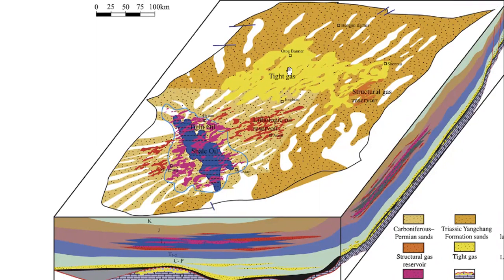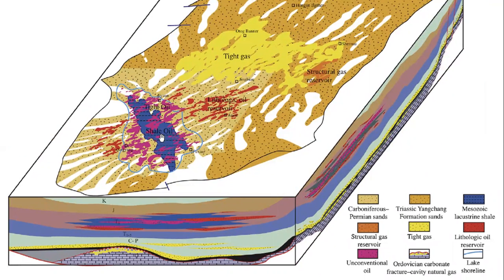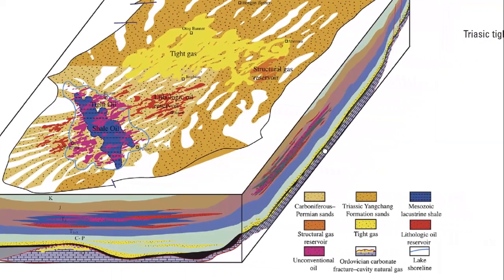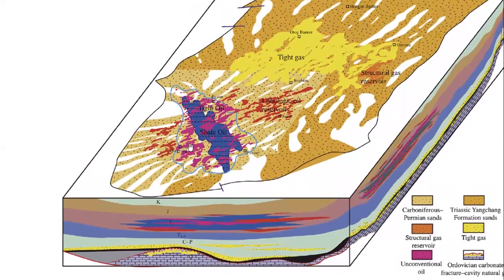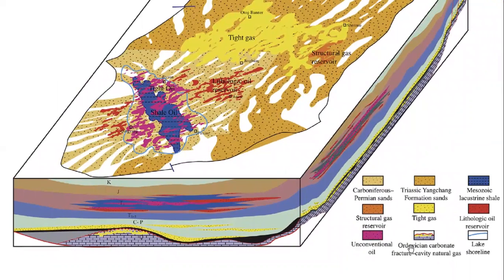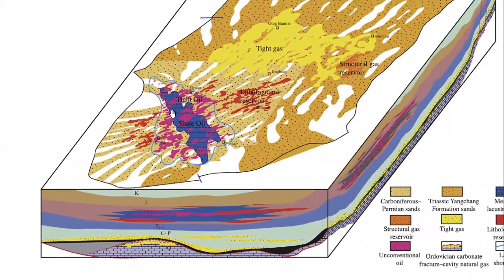The shape of the distribution follows the shape of the formation. And we have a lithologic oil reservoir in this basin — the main trapping mechanism is not structural but rather lithologic or stratigraphic. Then unconventional oil — another type of oil here. And this is the Ordovician carbonate fracture-cavity natural gas, along with the lake shoreline. The unconventional oil here likely refers to shale oil.